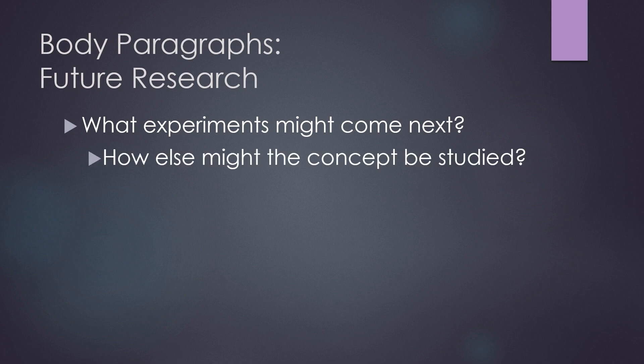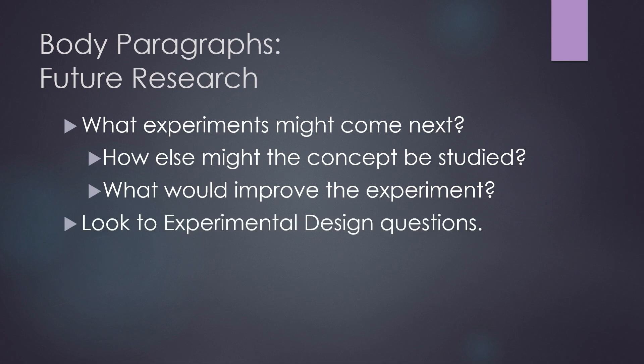Another body paragraph you might include in your lab report will discuss future research implications for this kind of experiment. For example, what kind of experiment might come next? In the potato battery experiment, for example, you may have used different kinds of food to study the flow of electrons under different conditions. How else might this concept be studied? What might improve the experiment? What might need to be changed to do that future research meaningfully? This kind of experimental design thinking can demonstrate that you understood the point of the experiment. If you feel stumped here, you can look to the experimental design questions in your lab guide to get your thinking flowing.